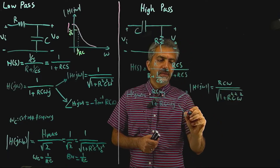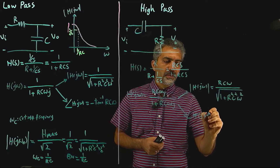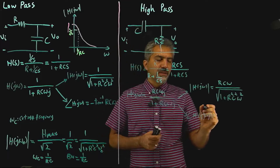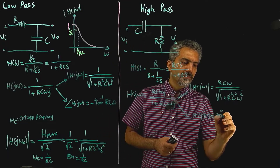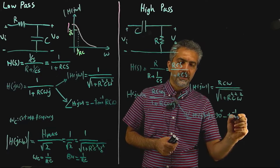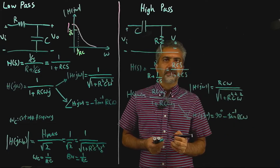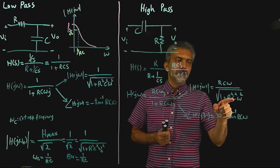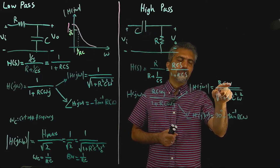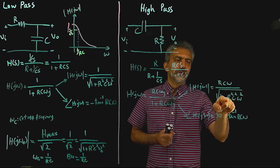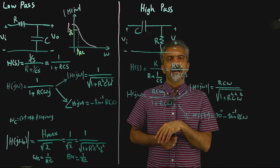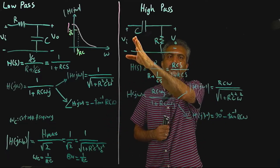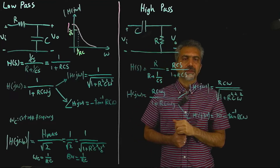The phase of H(jω): the phase of the numerator is actually 90 degrees, so the phase is 90 degrees minus arctan(RCω). You can quickly see that the situation is different here. For ω equal to 0, the denominator becomes 1, but the numerator is already 0. So H(jω) actually becomes 0 for ω = 0 or a DC input, which means that if you have a low-frequency or DC signal, none of that is going to pass through your circuit.